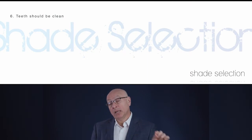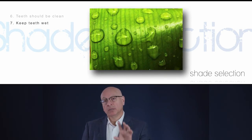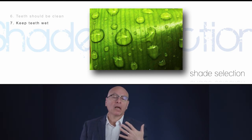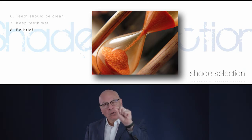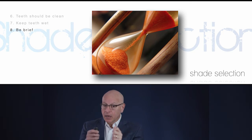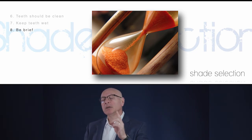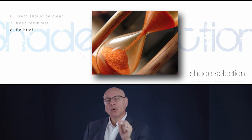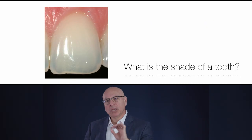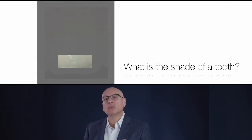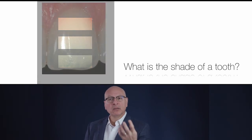The teeth we're selecting the shade from need to be clean. Keep the teeth wet because they dehydrate very fast — I always ask the patient to lick their front teeth when selecting the shade. Be brief. I'm sure it's happened to all of you that A1 looks good, then 2–3 seconds later A2 starts looking good, then B2 and D2, and suddenly the whole shade guide looks good. That's because the human brain's color discrimination only has about 5 seconds to make a good determination. We're going to select the shade from the middle of the tooth — that's the most representative area. The incisal edge is too translucent and the cervical is too red from the gingiva, so we always look at the middle.